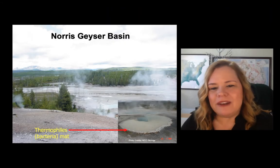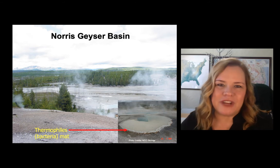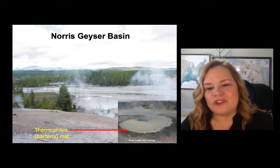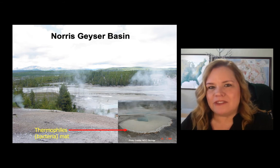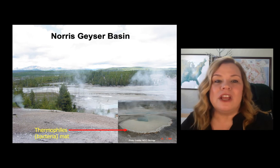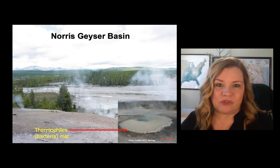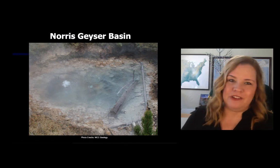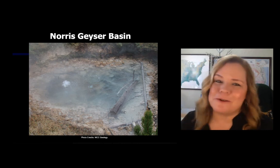When you look at Norris Geyser Basin, the acidity matters — it also matters for the heat because thermophile bacteria mats are very common there. Certain ones can tolerate a certain amount of acidity and heat, so you'll see certain colors in Norris Geyser Basin and different ones in others. When you get there, you can see hot springs, fumaroles, mud pots, and of course geysers — all of them exist in Norris Geyser Basin.